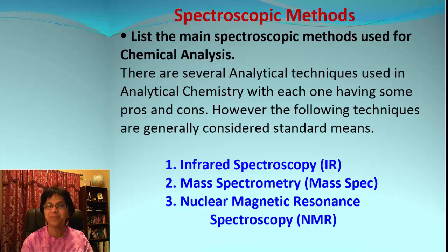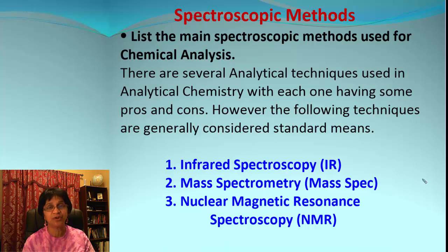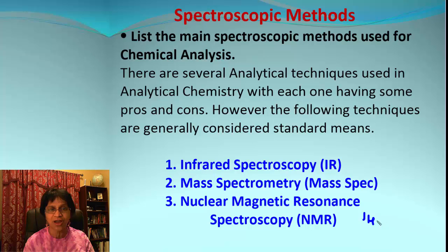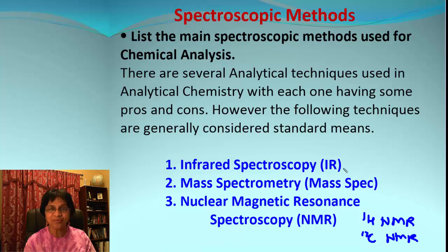Let's talk about the most important analytical techniques — ones that are easy to use, provide good information, and are reliable. Here is a list of the most commonly used techniques. First is infrared spectroscopy, which we call IR. Then there is mass spectrometry, which we call mass spec. And then there is nuclear magnetic resonance spectroscopy, simply called NMR — which can be either proton NMR (H-NMR) or carbon-13 NMR (¹³C NMR).